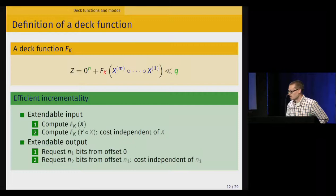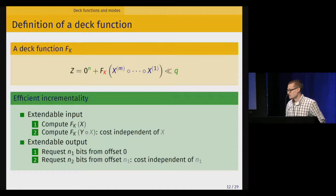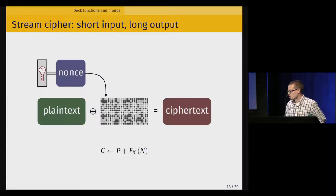DECK functions are the ideal abstraction for building a wide range of keyed symmetric crypto modes. For a stream cipher, simply input the nonce into the DECK function and request as many key stream bits as needed to encrypt the plaintext. For a MAC, input the message plaintext and request the t-bit authentication tag T as output. These modes are simple to implement thanks to variable-length input and output support.